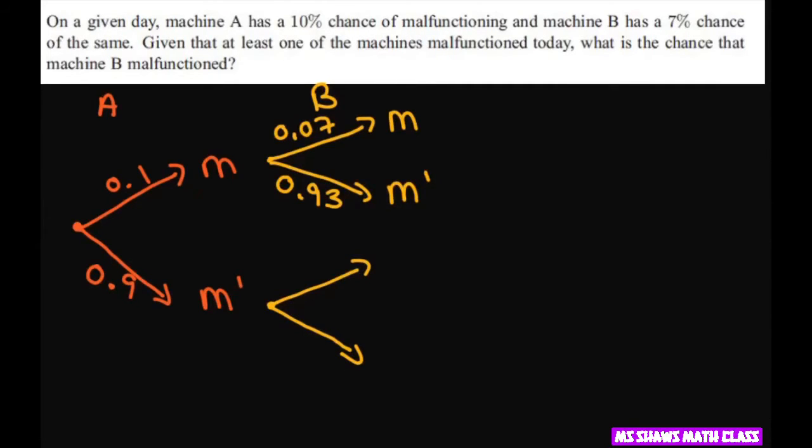And then you just copy it down again, because we're talking about the same day. 0.07 and 0.93, malfunction not malfunction.